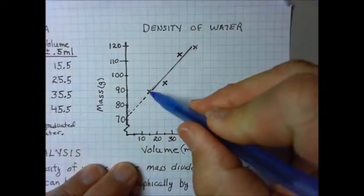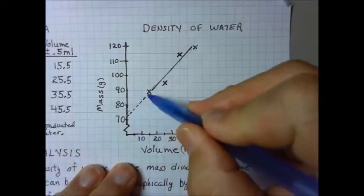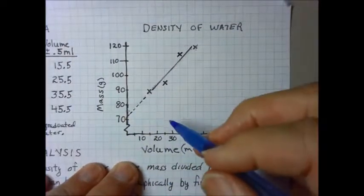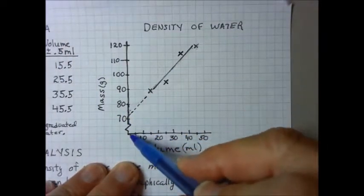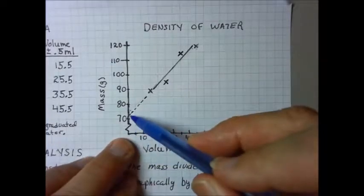I've drawn a solid line between the measurements that I made, and then a dashed line to where I've extrapolated here to the Y intercept. It's very important that you don't always assume that your line is going to go through zero. In this case, it did not.